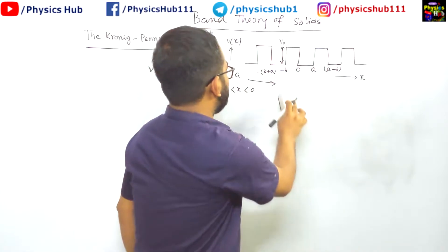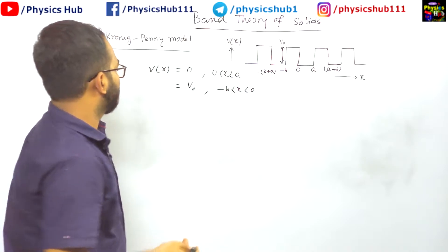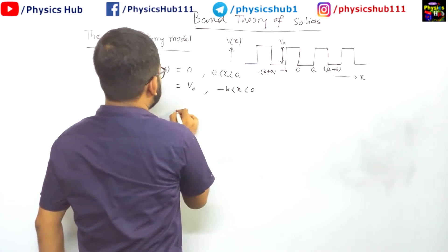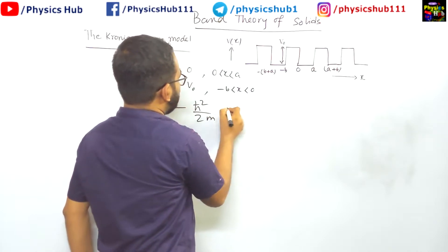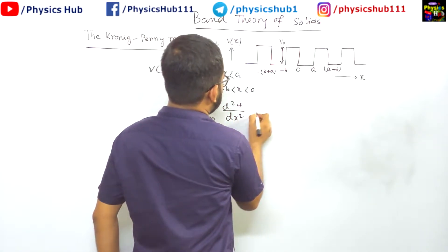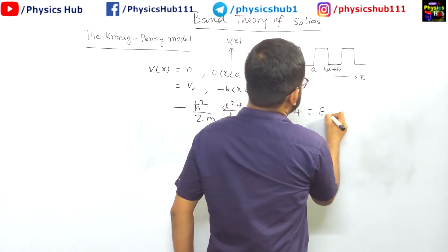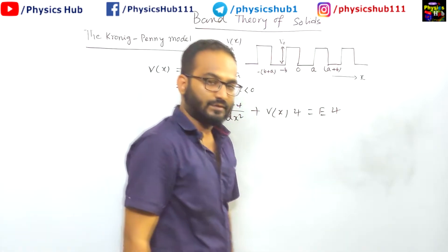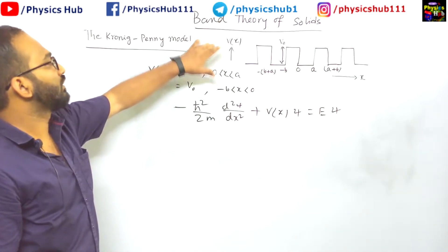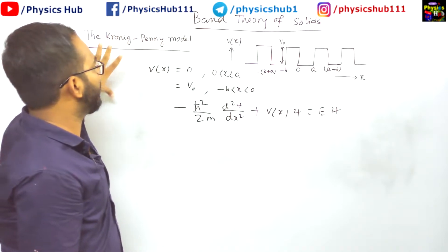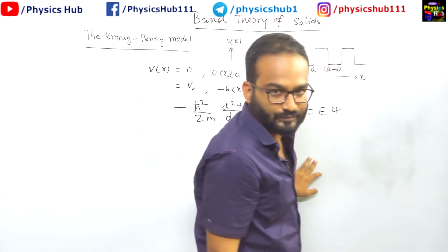So we can use the Schrödinger equation to solve this. This is a periodic potential. We can utilize the Schrödinger equation minus h bar square by 2m d square psi by dx square plus v of x psi equals e psi. So this Schrödinger equation can be used. Now, before going to solve the Schrödinger equation for this potential, we must know a theorem which is known as Bloch theorem.